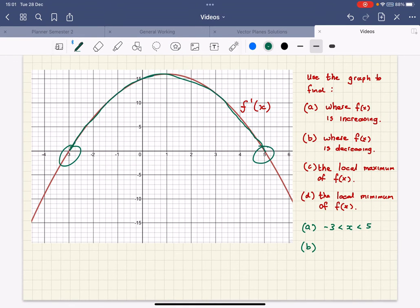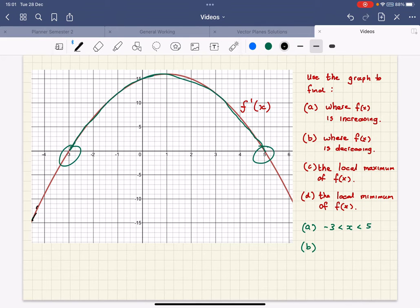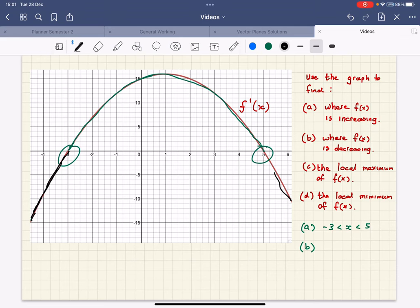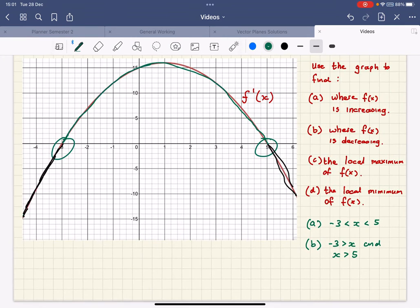f'(x) is above. So the opposite is going to be true. Let's do this in a different color, let's do it in black. These points here in black are where f'(x) is below the x-axis. So if x is smaller than -3 and where x is greater than 5, we are decreasing. We have a negative gradient.